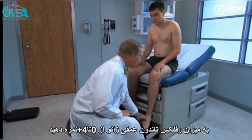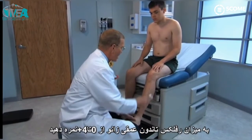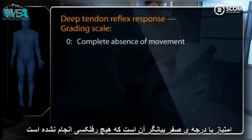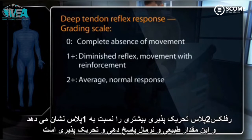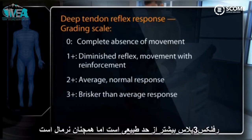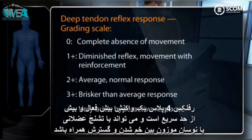When assessing deep tendon reflexes, grade them on a scale from 0 to 4+. A grade of 0 reflects no response. 1+ indicates a somewhat diminished reflex. 2+ shows greater movement and is the average normal response. 3+ is brisker than average but still normal. 4+ is a very brisk hyperactive response that by definition must be accompanied by clonus, a rhythmic oscillation between flexion and extension.